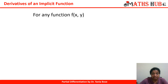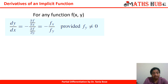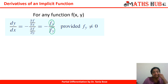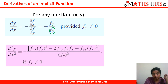For any function f(x, y), if you have to calculate the derivative dy/dx, it can be calculated as: put a negative sign in the numerator, calculate the partial derivative with respect to x (fx), and in the denominator calculate the partial derivative with respect to y (fy). So dy/dx = −fx / fy, provided fy should not be equal to 0.